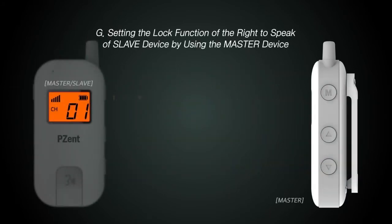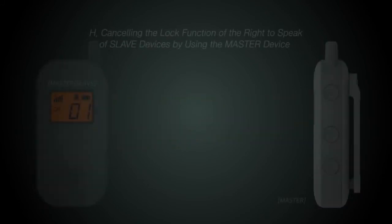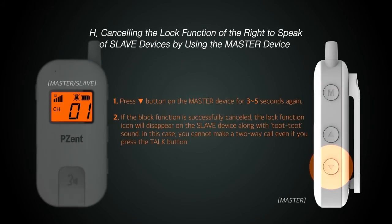The master can temporarily lock or unlock the talk function. Press the volume down button on the master unit for about 3 seconds to temporarily lock the talk function for all slaves. This enables the prevention of accidents caused by malfunctions from slave unit users who are not familiar with the operation method. To disable the lock function of master, press and hold the volume down button for about 2 seconds to reactivate the talk function.